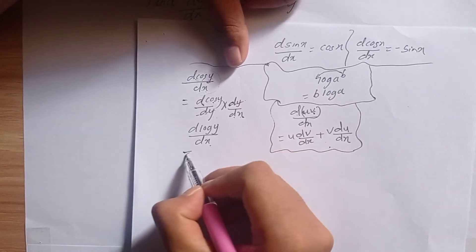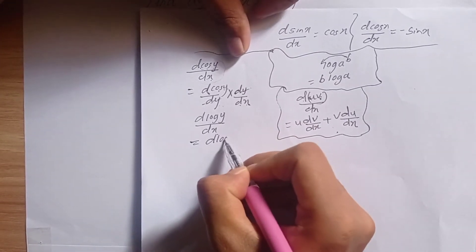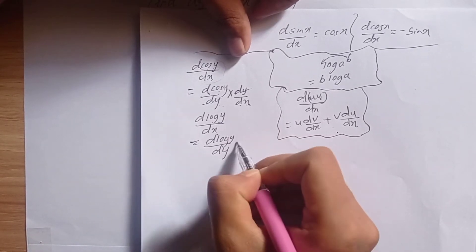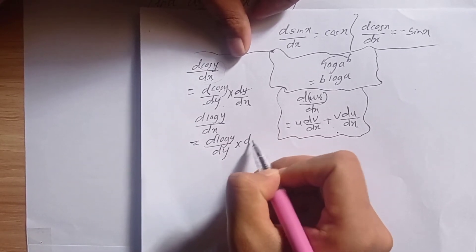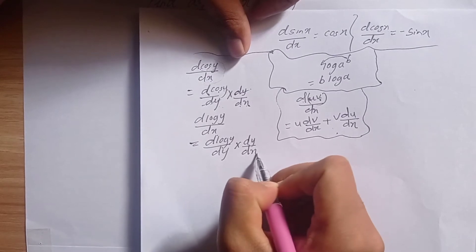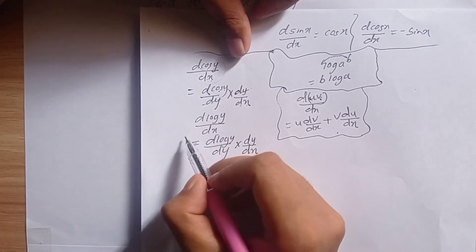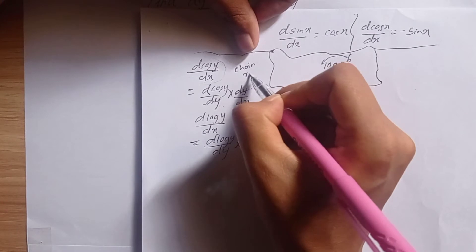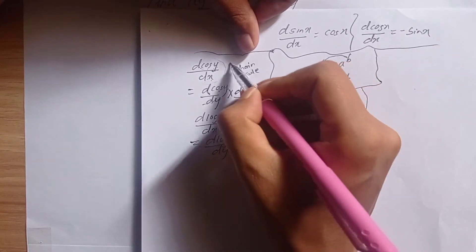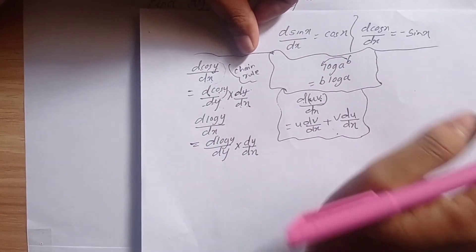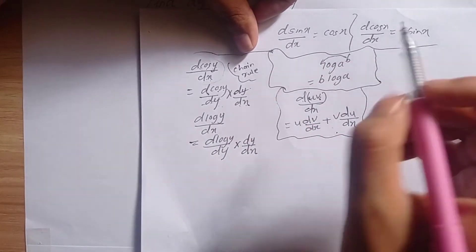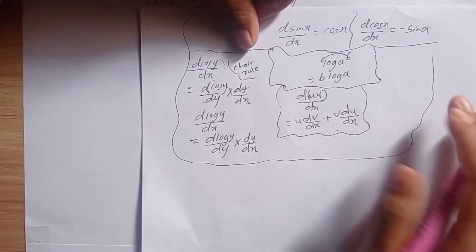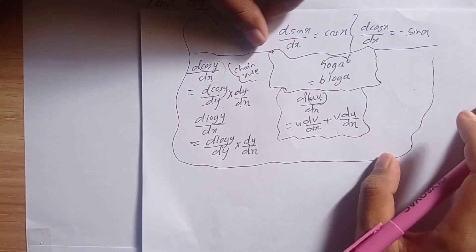Similarly, the derivative of log y with respect to x is: derivative of log y with respect to y, times derivative of y with respect to x. This is how we apply the chain rule in these mathematical problems.